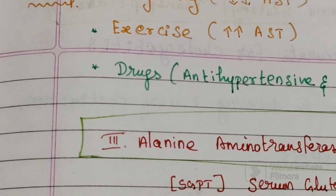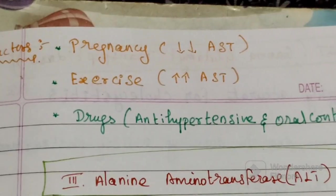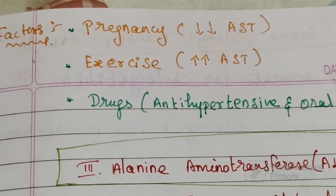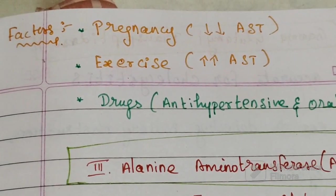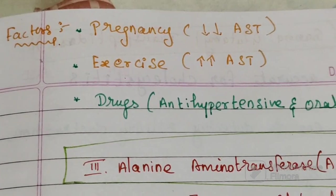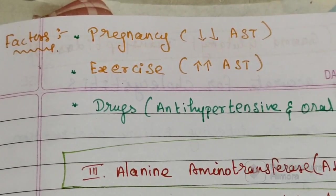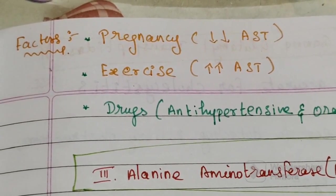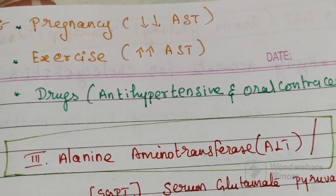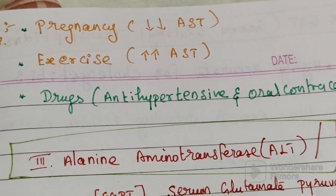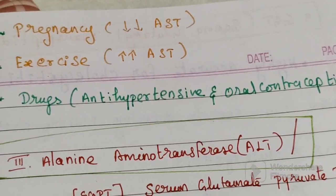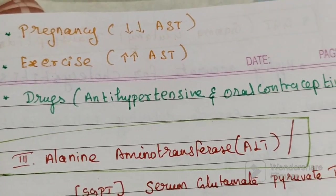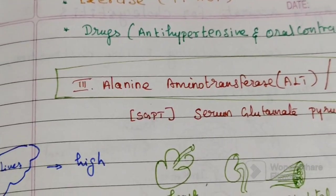Factors which interfere with serum AST level include: pregnancy, which decreases AST level; exercise, which increases AST level; and drugs such as antihypertensives and oral contraceptives, which are also associated with altered AST levels.